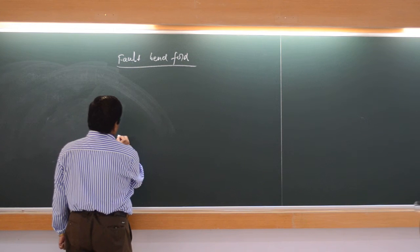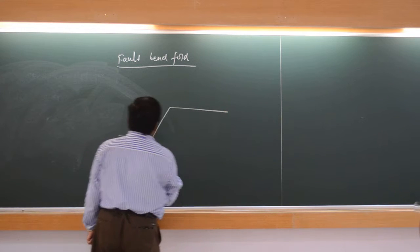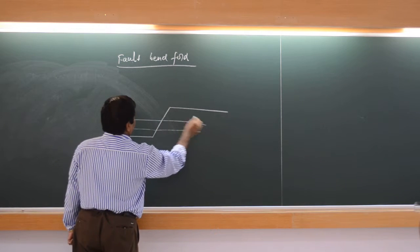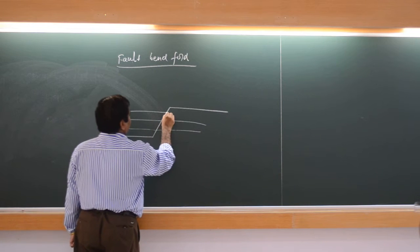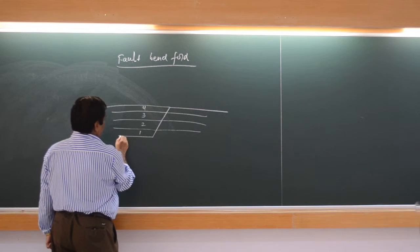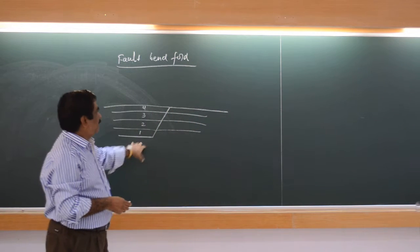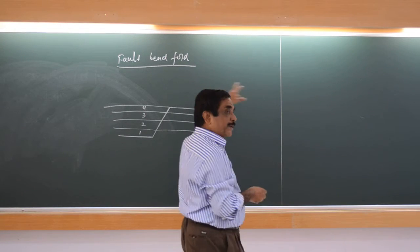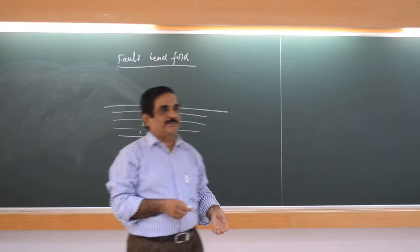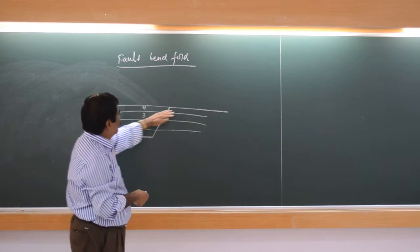Suppose I draw it this way. So this is treated. This is the fault theory. Fault-bend fault has a two-flat, one ramp. Today, what we will discuss about fault propagation — where this flat will not be there. That is the distinction I want to make. It is very easy, but we should understand that. In case of fault-bend fault, you have two flats, one ramp.